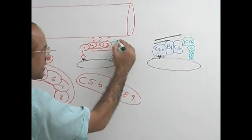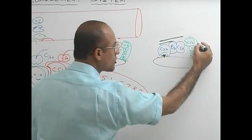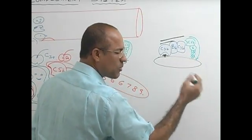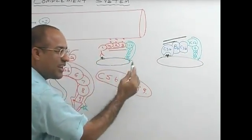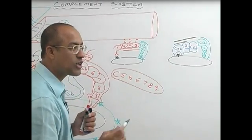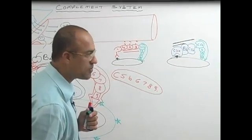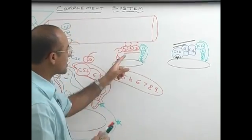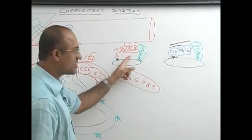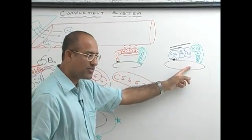Now, this pathway, here and here. This is, what is that? It's called final common pathway or terminal events or late events in complement activation. So this is classical pathway, this is alternative pathway.